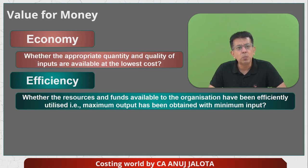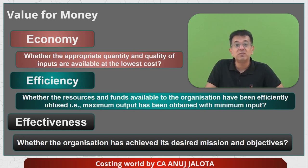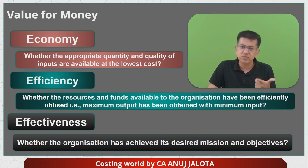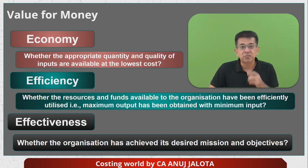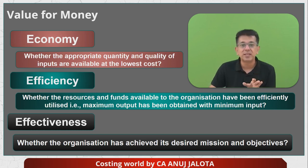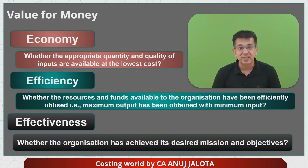Sometimes you might not be economical, and sometimes you might not be efficient either. But this last thing is most important — effectiveness. Effectiveness means has the organization achieved its desired mission and objectives? Coming back to the Taj Mahal example: maybe economy wasn't achieved — we spent more — and more people were deployed, so efficiency was also not achieved. But is the Taj Mahal clean or not? If that is met, we say it is okay not to have economy and efficiency, but effectiveness should always be there. The objectives of the organization should be met — that is nothing but effectiveness.